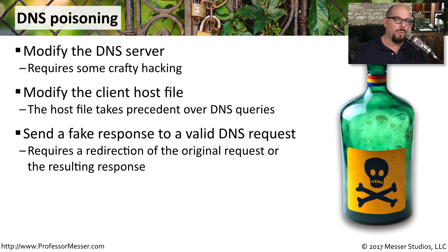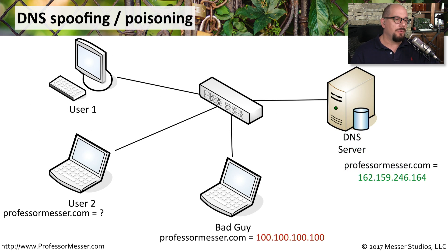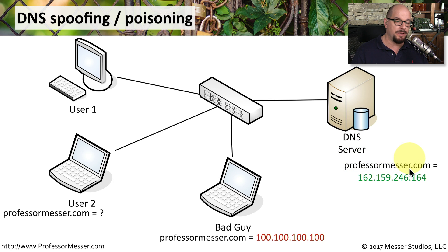There are many different ways to do this, but most of them involve taking control of the DNS server. Here's how this might work. You've got a couple of users that need access to ProfessorMesser.com. There's a bad guy who's going to want to poison the DNS server, and then you've got the DNS server itself, which has ProfessorMesser.com and the IP address for the web server.